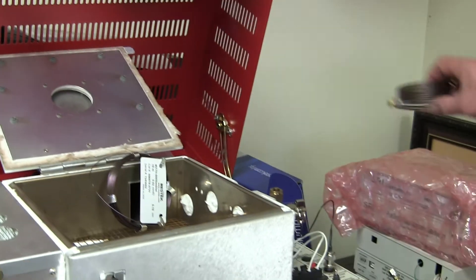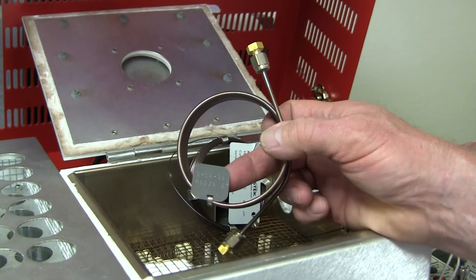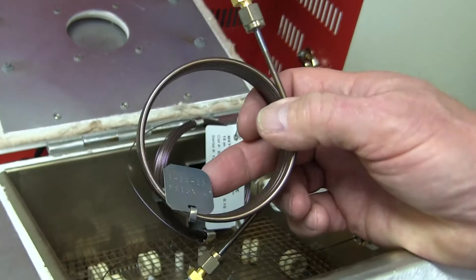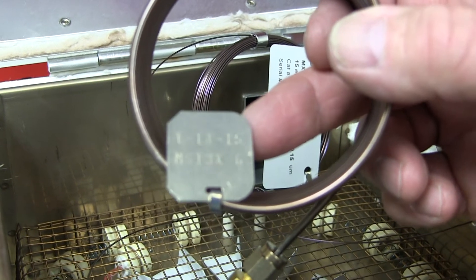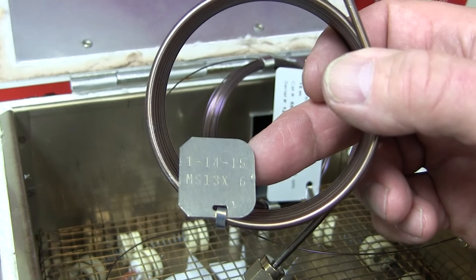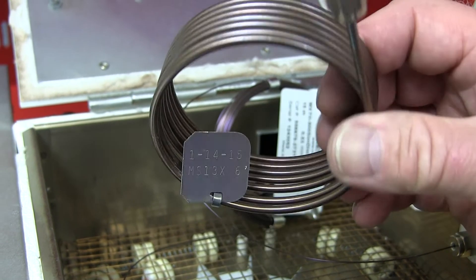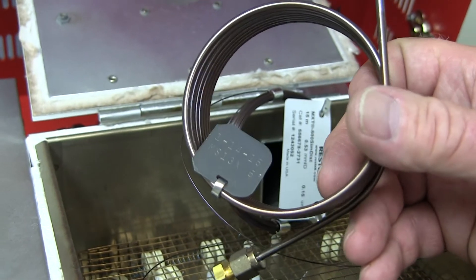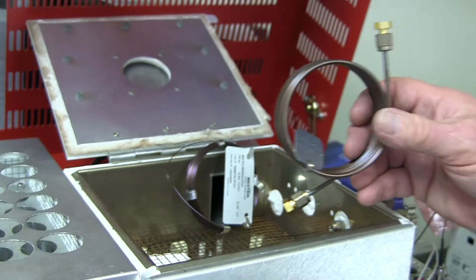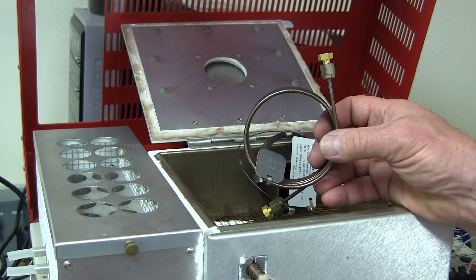A packed column like this has particles of material inside. This particular one is a molecular sieve 13x column and it has a temperature limit of at least 350 degrees centigrade, so hard to really heat this one up too hot. But there are many columns, especially these older packed columns, where the temperature limits are only 150 degrees. So you have to be careful not to exceed the maximum temperature, otherwise you'll definitely damage the column.